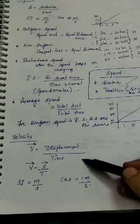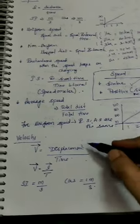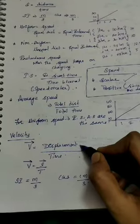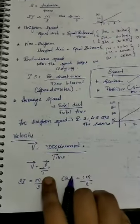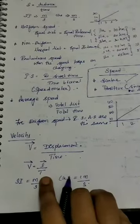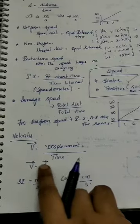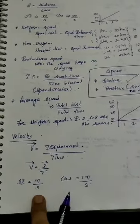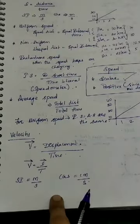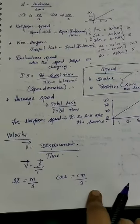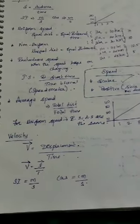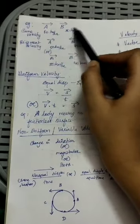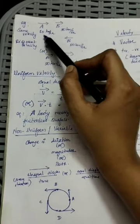Now for velocity: the formula is displacement divided by time taken. Since displacement is a vector quantity, velocity is also a vector quantity. The notation is: velocity equals displacement divided by time taken. The SI unit is meter per second and the CGS unit is centimeter per second.